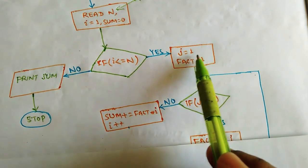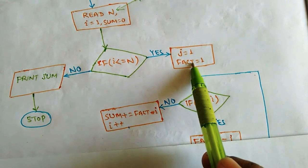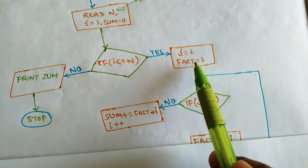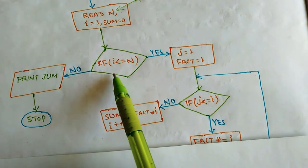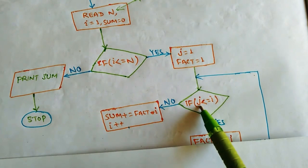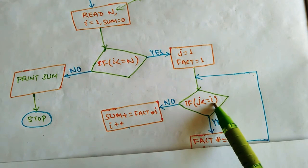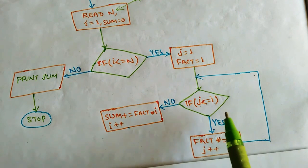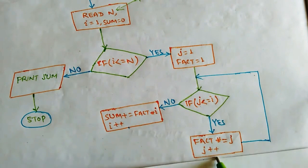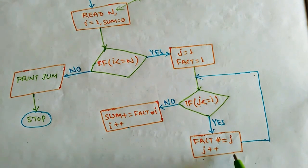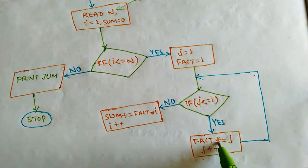We check: is j less than or equal to i? If i is 1, then we check whether j is less than or equal to i. If yes, we go to the Yes part and calculate the factorial. The shorthand assignment is: fact *= j, which means fact = fact multiplied by j. Then j is incremented by 1. We repeat this process — this is how the inner factorial loop works.